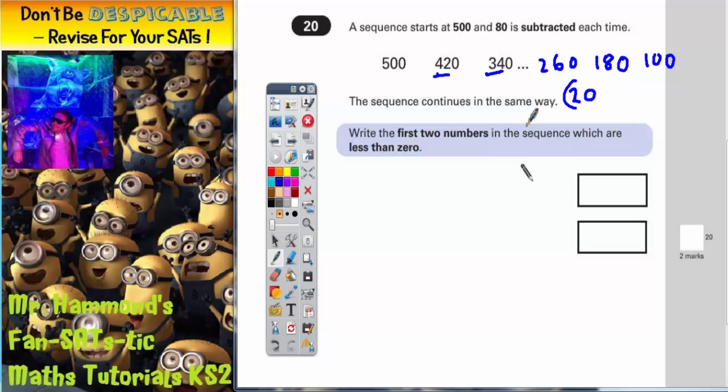Now the question is, it says write the first two numbers in the sequence which are less than 0. But we're on 20. Now we've got to take 80 off this. So now we really do need to start thinking because this is going to send us into negative numbers.